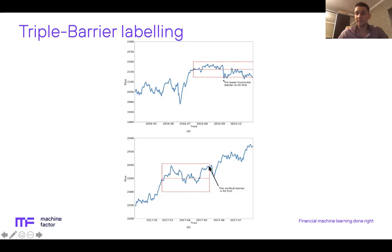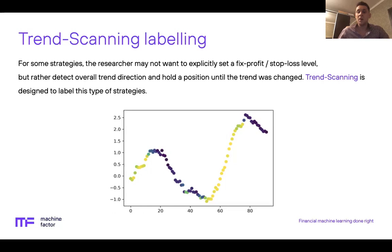The second algorithm used to label financial datasets is trend scanning labels. In some strategies, the researcher may not want to explicitly set a fixed profit or stop loss level, but rather detect overall trend direction and hold the position until the trend changes. This algorithm was also suggested by Marcos Lopez de Prado. The idea is to fit multiple look-forward linear regressions and define the one which yields the maximum t-value, based on which the future trend is defined.